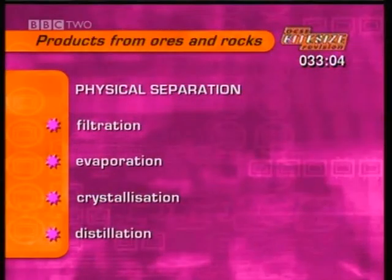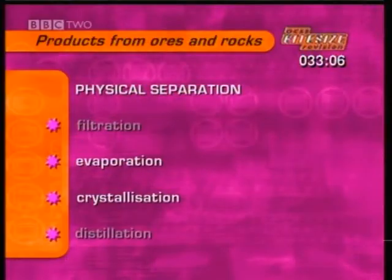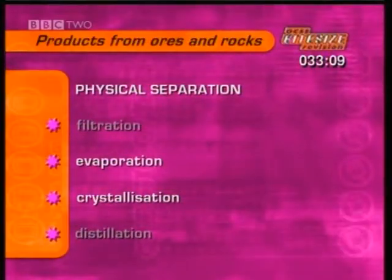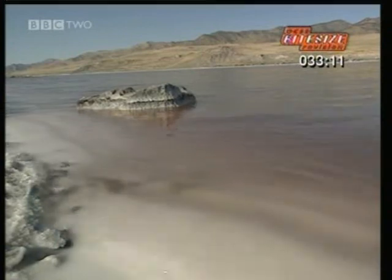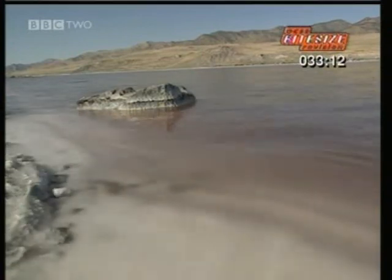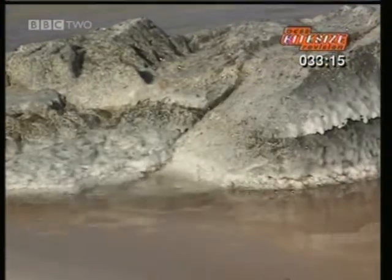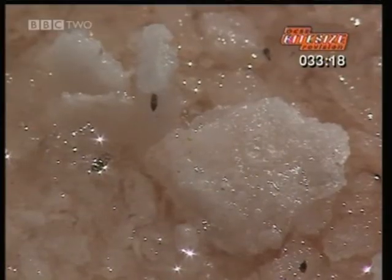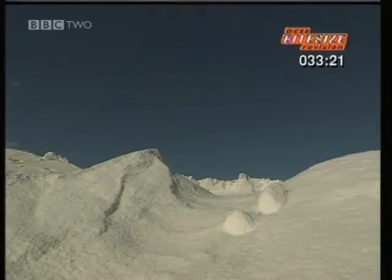This clip explains how we get salt from a salt lake using evaporation and crystallisation. This is the Great Salt Lake in Utah and, surprise surprise, it contains lots of salt. Local industry takes full advantage.